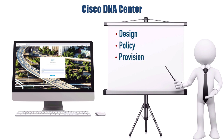We can also do provisioning with Cisco DNA Center. Here we can essentially do plug and play for our devices. We can have a new network device sent to whatever location where it's going to be installed and have somebody there plug it in. When the device boots up it's going to go out and get IP address information from DHCP, including DNS server information. It's going to resolve the IP address of a DNA Center server, go up to that server, and based on its serial number it's going to download a configuration file. So we pretty much have zero touch on getting that device installed — we just set up the profile within DNA Center, had somebody plug it in, and it installed itself.